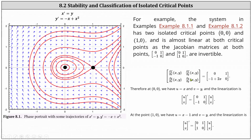The system is also almost linear at the critical points as the Jacobian matrices at these two points are invertible, meaning they have inverses. The Jacobian matrix for the given system is the two by two matrix with entries zero, one, negative one, negative one plus two x. At the point zero comma zero, the Jacobian matrix has entries zero, one, negative one, zero, which is invertible because the inverse does exist, indicating the system is almost linear at zero comma zero.